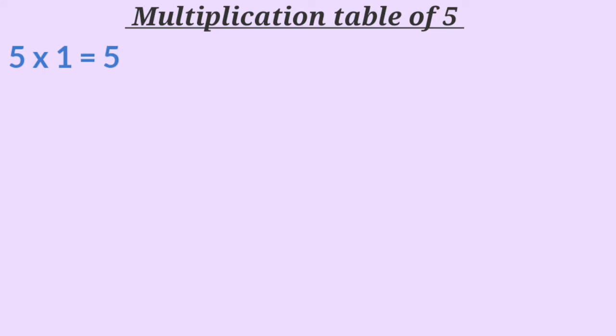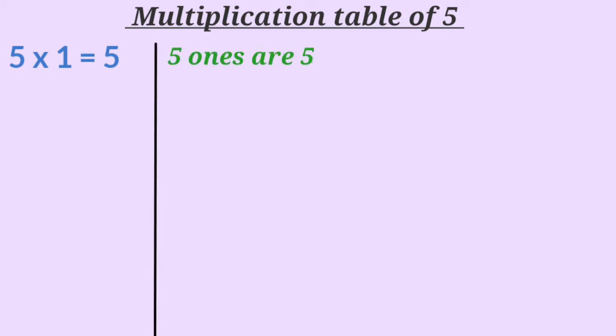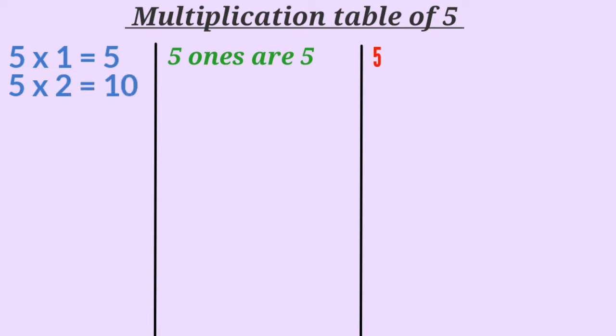5 multiplied by 1 is 5, or 5 ones are 5. Here we are adding number 5 only one time. 5 multiplied by 2 is 10, or 5 twos are 10. That means we are adding number 5 two times.